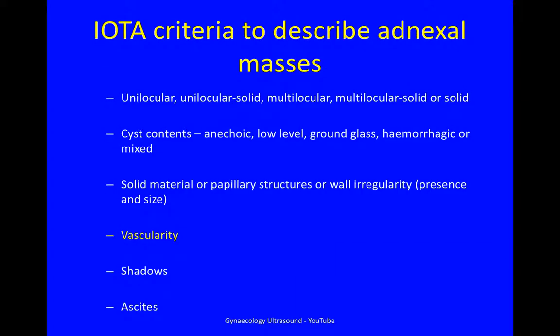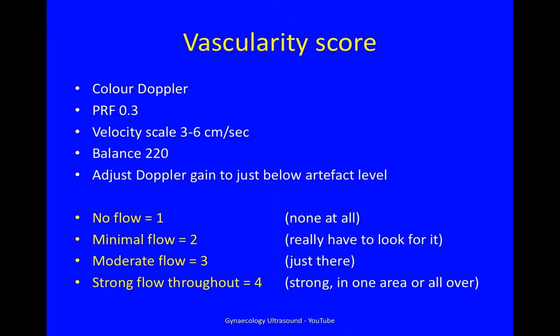These are the various criteria used to describe adnexal masses, and we're going to be talking about vascularity. The vascularity score is subjective and very important. It's arrived at using colour Doppler at a PRF setting of 0.3, which should give you a velocity scale of around 3 to 6 centimetres per second, with a balance of 220.